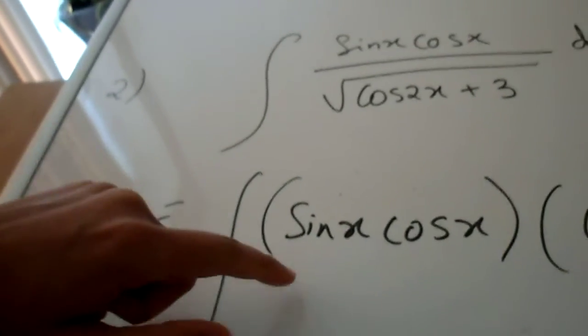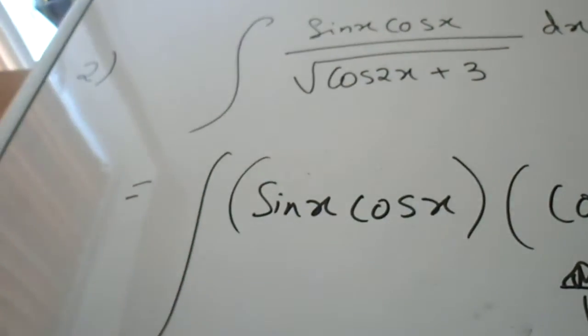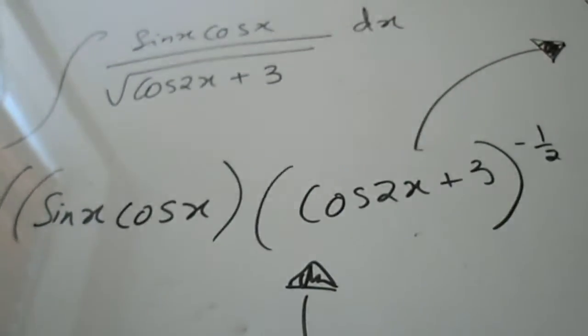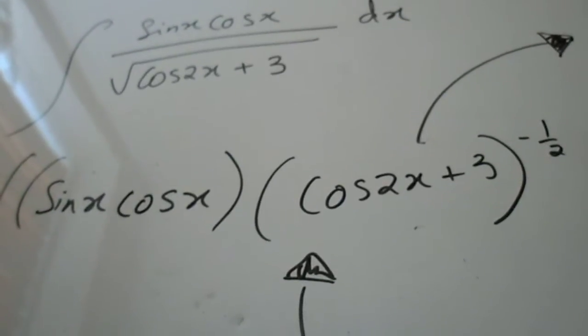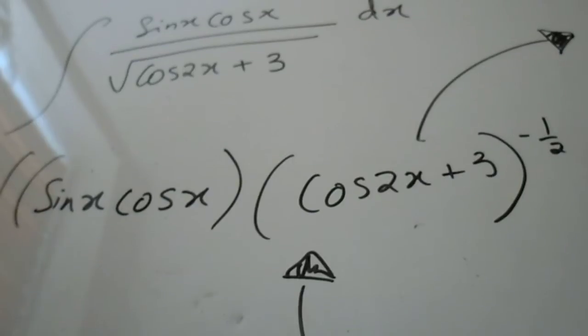So you will obtain sin x cos x which of course is already in the numerator multiplied by cos 2x plus 3 to the power of minus half. Do not forget to apply your rules of indices.